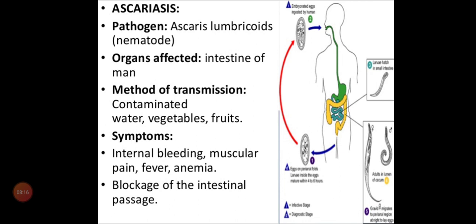What are the symptoms of Ascaris lumbricoides? Internal bleeding will be there, and muscular pain, fever, anemia. Internal bleeding occurs in the intestine because from the small intestine, through villi, it will mix with the blood. When the small intestine is disturbed, there is a rich supply of blood vessels, so internal bleeding occurs and leads to anemia. The person becomes very tired because of the reduced number of RBCs and lower blood levels.